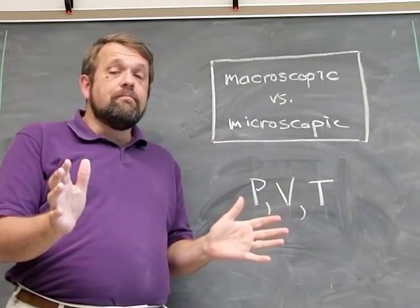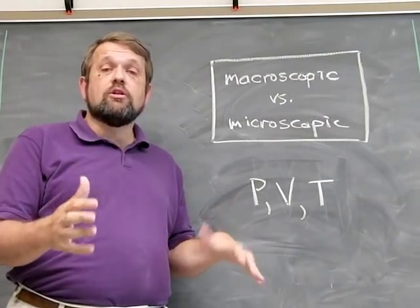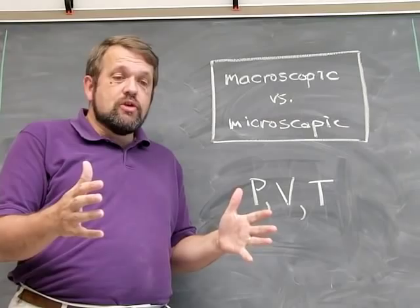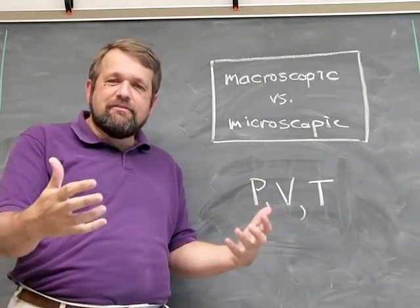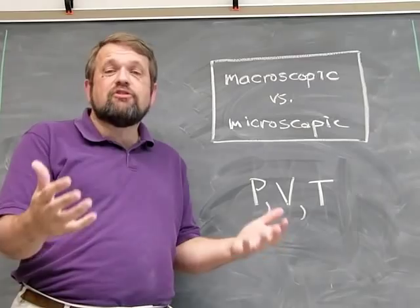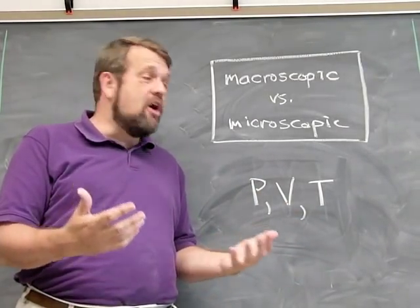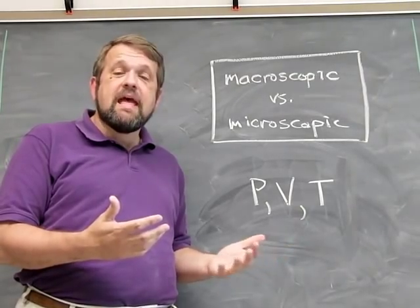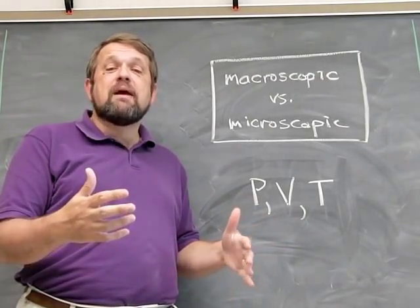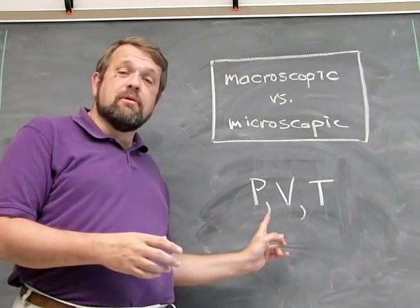Today we're going to talk a lot about what are called PVT systems. These are systems whose macroscopic state of affairs is described by just three numbers: a pressure P, a volume V, and a temperature T. The macroscopic state of the system is just these three numbers.